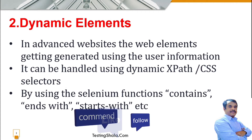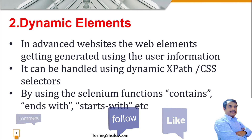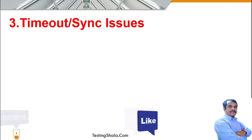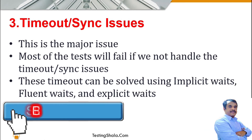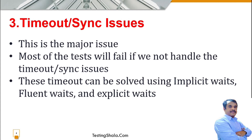Even with those approaches, we still face a lot of issues and should think of various trial-and-error methods for dynamic elements. The third challenge is timeout or sync issues. This is a common issue faced across any automation tool — when objects are not loading properly and take more time, your automation tool will time out and your test cases will fail. We need to tell the automation tool to wait for a particular period using implicit waits or fluent waits.